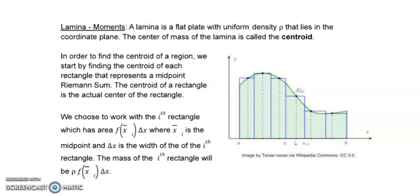So what we're going to do is we are going to look at the midpoint heights. Do you see here how I've got the midpoint Riemann sum for each of these rectangles? So in order to find the centroid, we find the centroid of each of the rectangles of the midpoint Riemann sum.